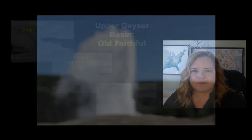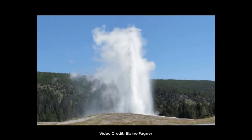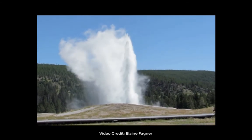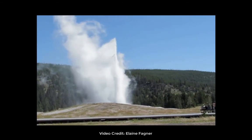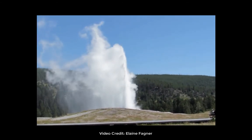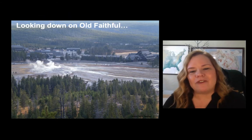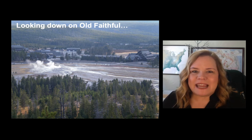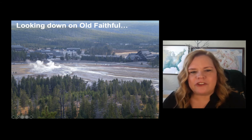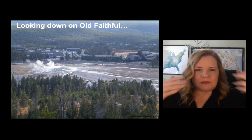Old Faithful is the most predictable geyser in Yellowstone — also a cone geyser in the upper geyser basin, unlike Steamboat Geyser which is in the Norris Geyser Basin. She goes off every 90 to 120 minutes. Looking down from other trails, this is the Old Faithful Inn — and this is a good shot of how surface water runoff comes off after every eruption around its 90-ish minute sequence.